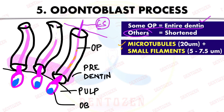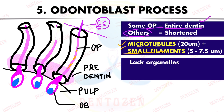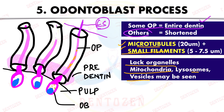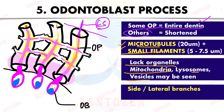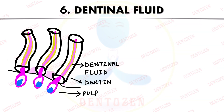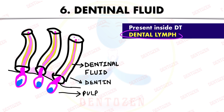Inside the odontoblastic processes there are microtubules and small filaments. Organelles are generally not present, though sometimes mitochondria, lysosomes, and vesicles may be seen. These odontoblastic processes also have lateral branches, as with the dentinal tubules. These lateral branches of the odontoblastic process extend into the adjacent dentinal tubule.